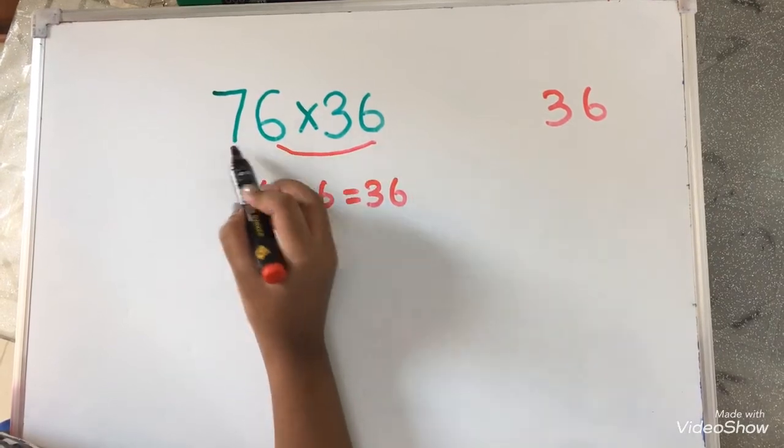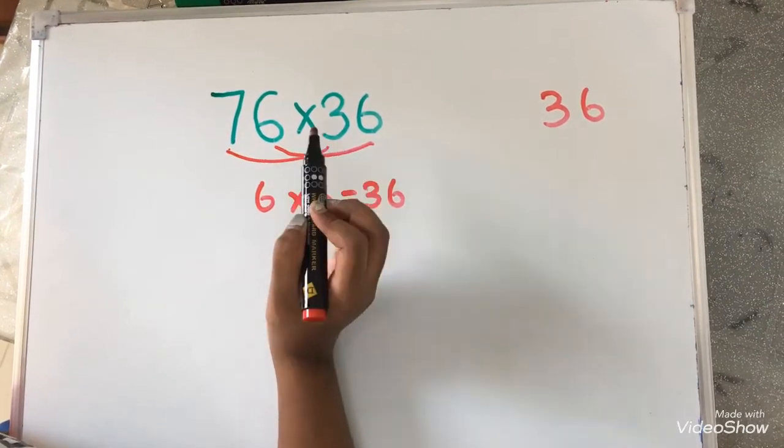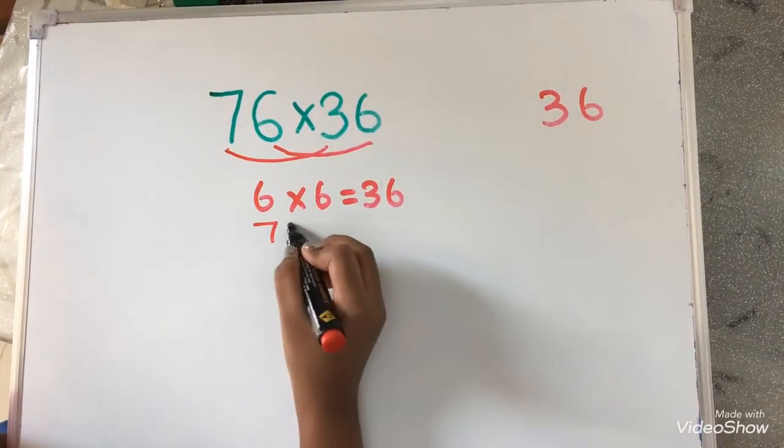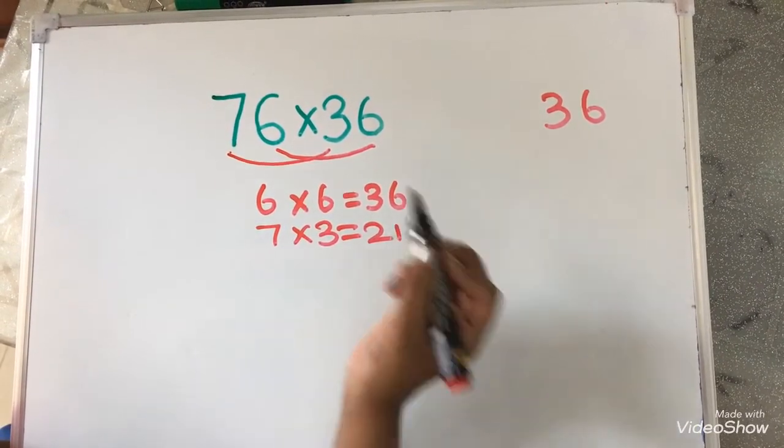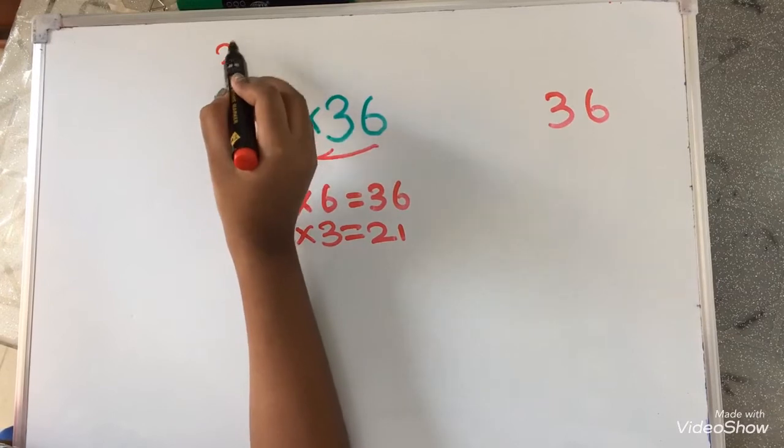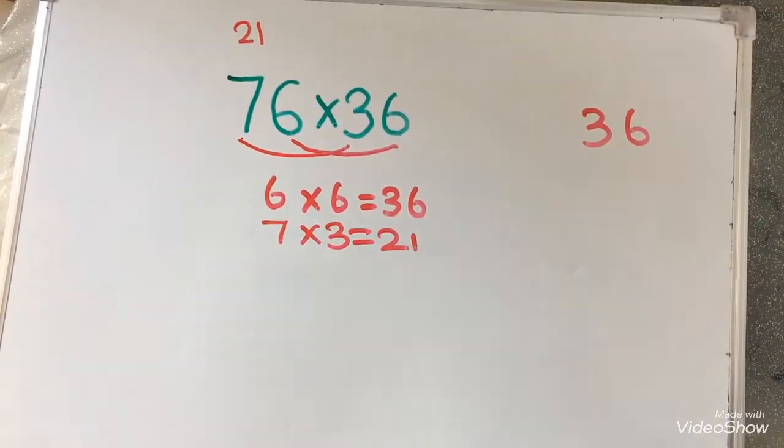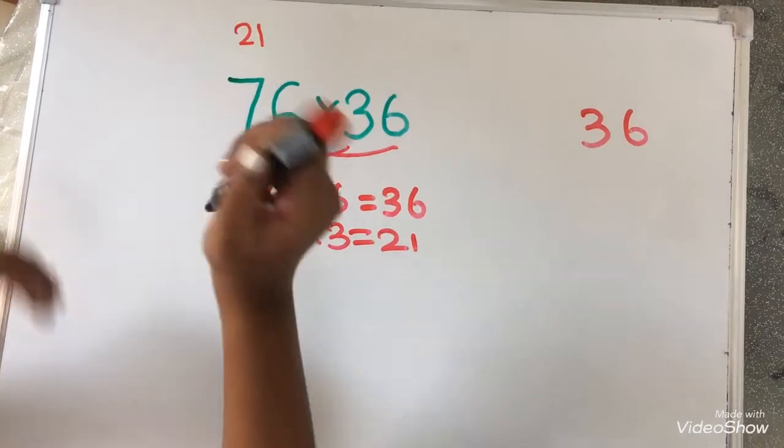Now, 7 into 3. 7 into 3 equals to 21. I am going to write it over here. Now, I am going to add the ones digit 6 with 21.